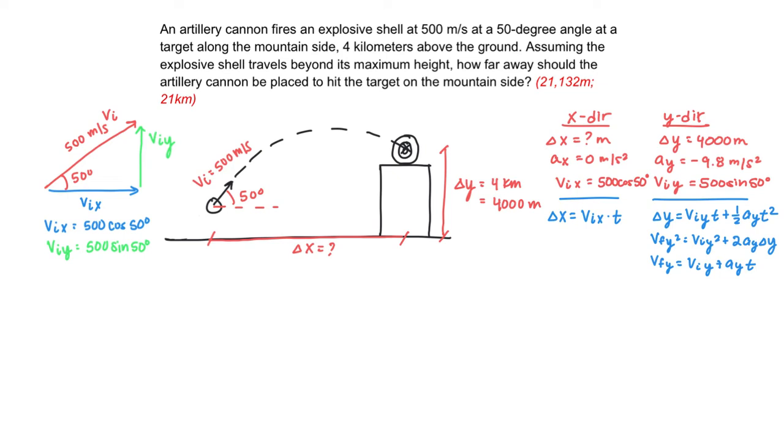Now, for the most important part of the problem-solving process, now that we have our diagram, our given information, and we've listed our relevant equations, we need to plan our solution, thinking about where we want to end up, and working backwards from there to figure out how we start. So, what am I solving for in this problem? I'm solving for the delta X, the horizontal displacement.